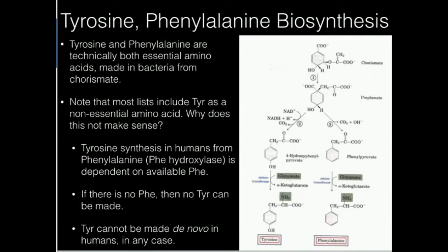There is one reaction in humans — phenylalanine hydroxylase — that converts already ingested phenylalanine to tyrosine. In my mind, that alone does not justify tyrosine being nonessential, because if we don't have phenylalanine in the diet, then we don't have any tyrosine. If you're not getting either one, you've got no tyrosine. So it is nonsense that tyrosine is nonessential — it has to be essential. Tyrosine, phenylalanine, and as we'll see in the next video, tryptophan cannot be made de novo in humans. They are essential amino acids.